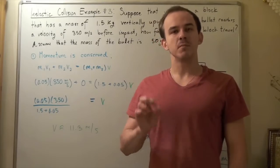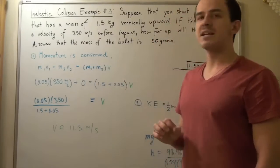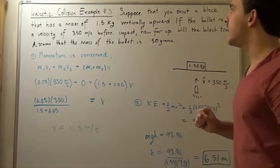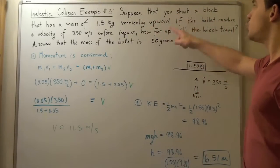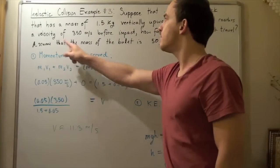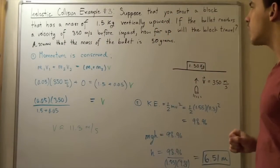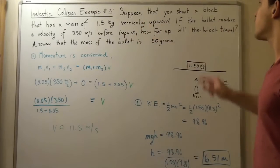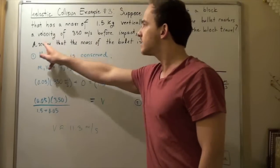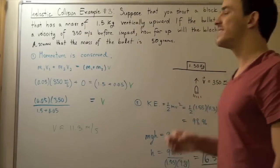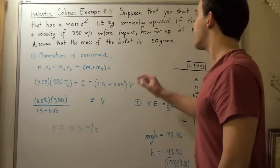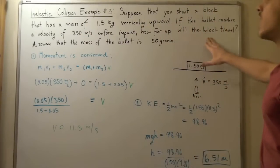Let's look at example number three that deals with inelastic collisions. Suppose that you shoot a block that has a mass of 1.5 kilograms vertically upward. If the bullet reaches a velocity of 350 meters per second before impact, how far up will the block travel?